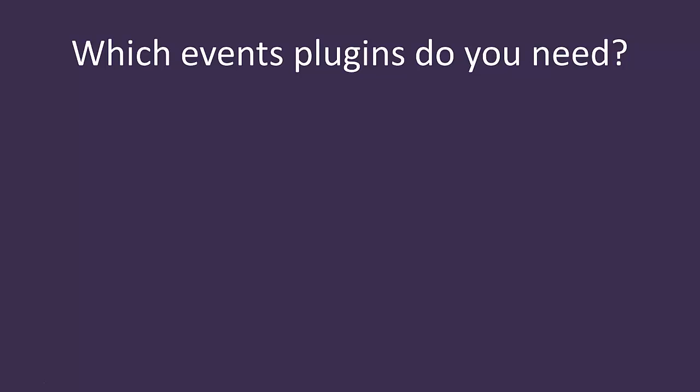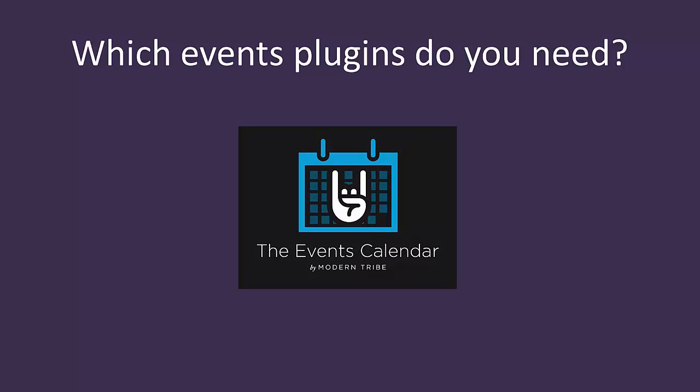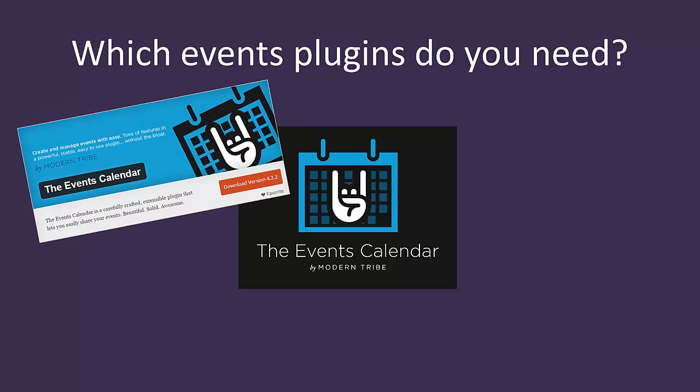Now we've thought about the different types of events websites, we can decide which events plugins you will use for your website. Throughout this course, I'm going to be focusing on a suite of events plugins from US WordPress company Modern Tribe. The Events Calendar is a free WordPress events plugin and is actively used on over 400,000 websites around the world, so it's definitely one of the most popular plugins out there for events, if not the most popular.